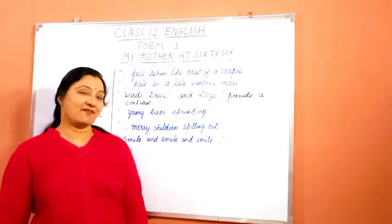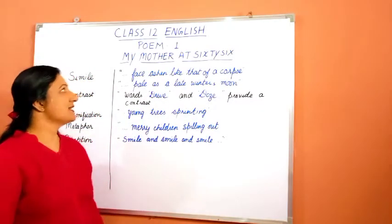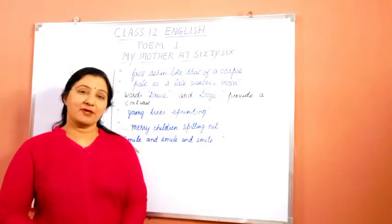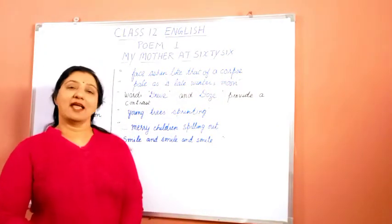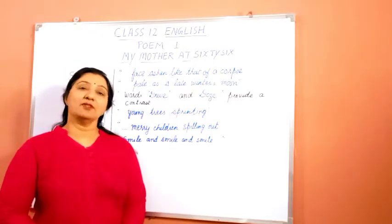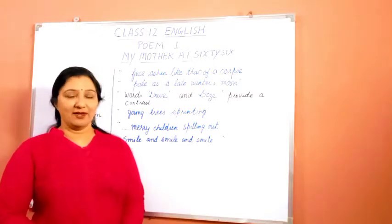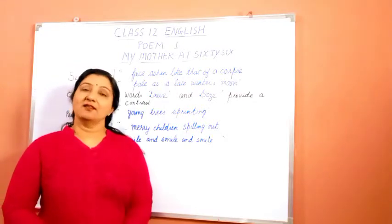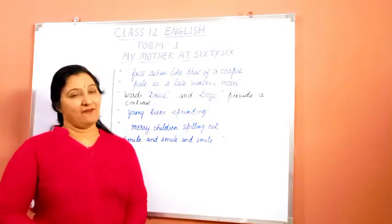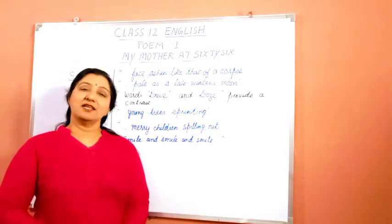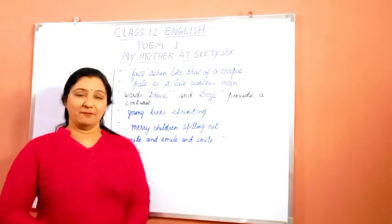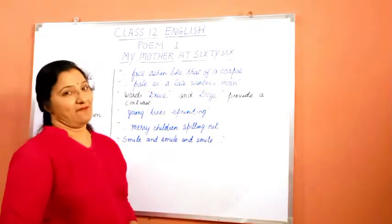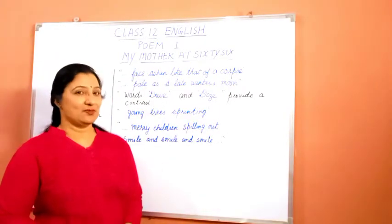Let us start with Poem 1, that is 'My Mother at Sixty-Six'. All of you know this poem is written by Kamala Das. In this poem she talks about the pain experienced by a woman when she looks at her aging mother, and the thought of losing her fills her heart with pain.